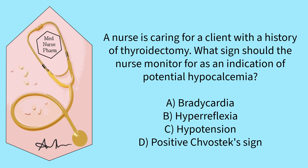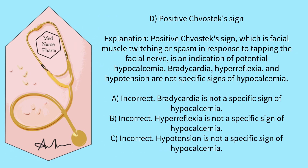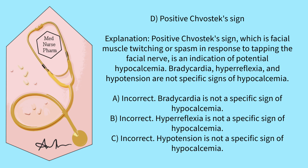A nurse is caring for a client with a history of thyroidectomy. What signs should a nurse monitor for as an indication of potential hypocalcemia? A) Bradycardia, B) hyperreflexia, C) hypotension, D) positive Chvostek's sign. The correct answer is D. Positive Chvostek's sign, which is facial muscle twitching or spasm in response to tapping the facial nerve, is an indication of potential hypocalcemia. Bradycardia, hyperreflexia, and hypotension are not specific signs of hypocalcemia.